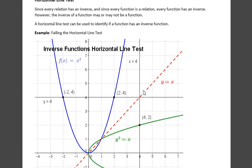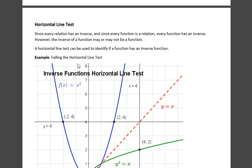Horizontal line test. Every relation has an inverse. You just swap the coordinates. And that means every function will also have an inverse, because functions are relations. However, the inverse of a function may or may not be another function.